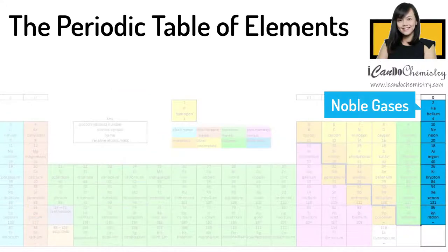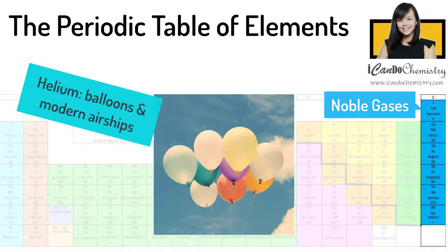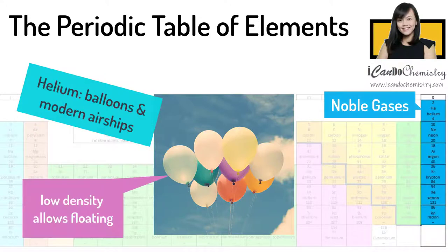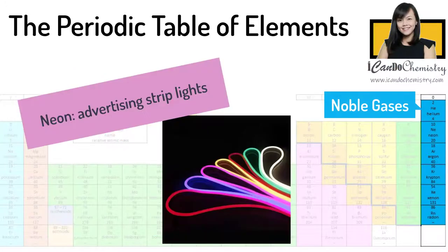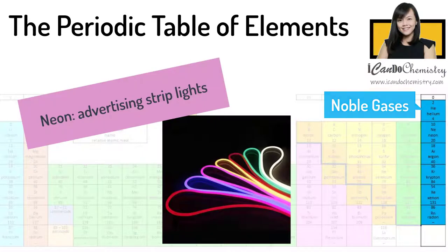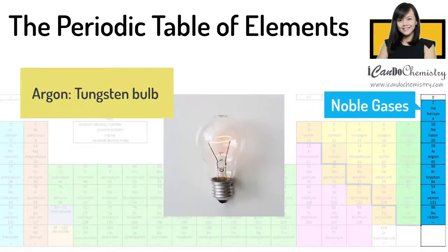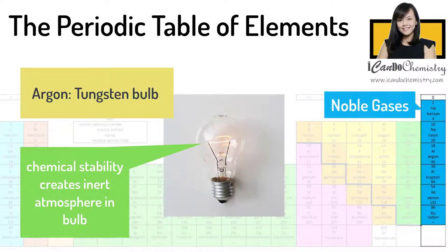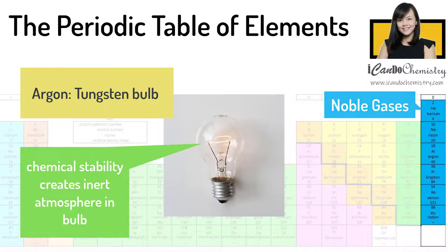Noble gases are widely used due to their chemical stability. Helium is used in small balloons and in modern airships because of its low density. Neon is used in advertising strip lights. Argon is used in tungsten bulbs; its chemical stability provides an inert atmosphere to prevent oxidation of the filament.